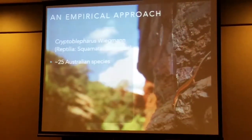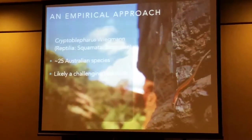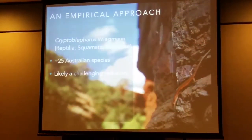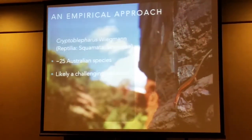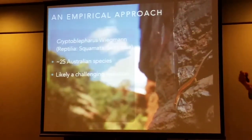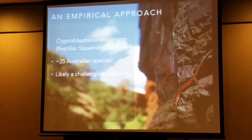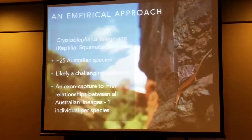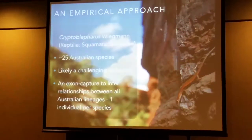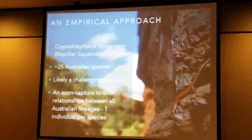The group of charismatic little lizards that I'm working on is within the Cryptoblepharus genus. There are approximately 25 Australian species, and I think this is an extraordinarily well-suited group to test some of these approaches. There's likely a challenging radiation within Australia, and a second radiation that is a little bit less challenging, because the number of species and the time of diversification in some of those species are longer.